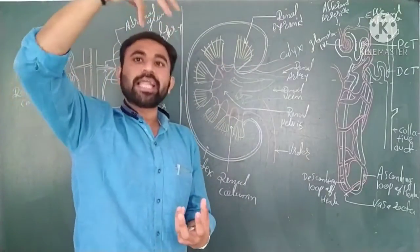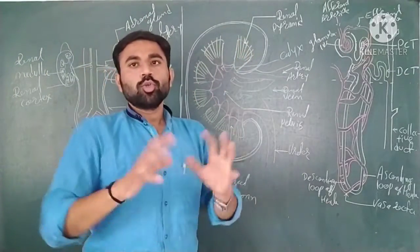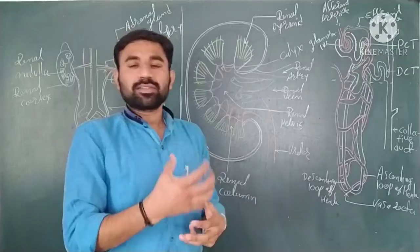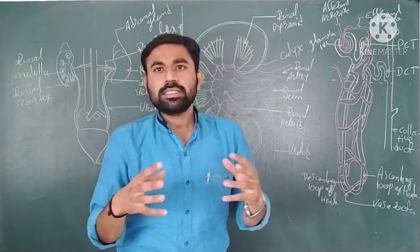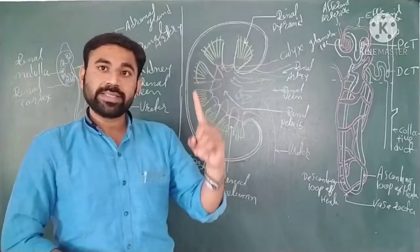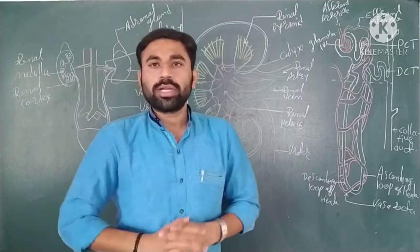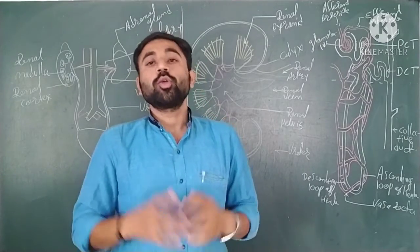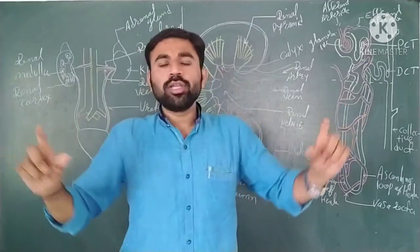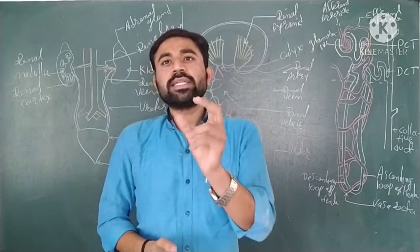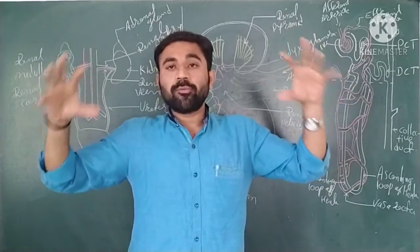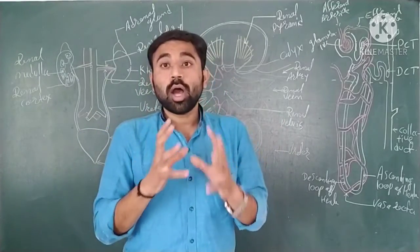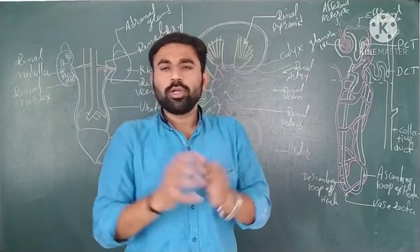In each renal pyramid there are many uriniferous tubules, or nephrons. There are approximately one million nephrons present in a single kidney, so two kidneys contain about two million nephrons. Each single uriniferous tubule is about 3 centimeters long — so with one million nephrons, each 3 centimeters long, the structure is extremely convoluted and compact.